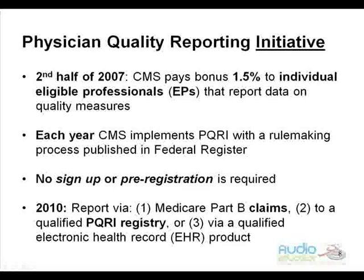To qualify for the PQRI incentive payment, the eligible professional — or EP, as we'll say quite a bit — they have to meet certain criteria for satisfactory reporting. There are three reporting mechanisms. One: claims-based reporting, where the measure is reported on your claim. Number two: a qualified registry. And number three: via a qualified electronic health record. The health record, right now, is not available to anesthesia. Even if they are using electronic health records in the operating room, they still wouldn't be able to report PQRI that way. The registry, at this time, is also not available.